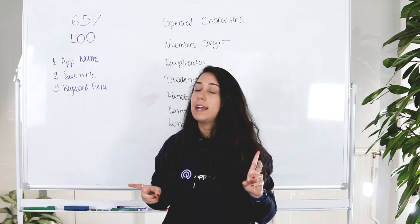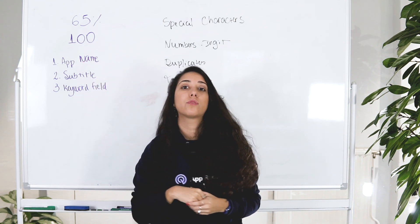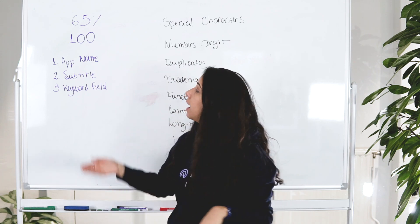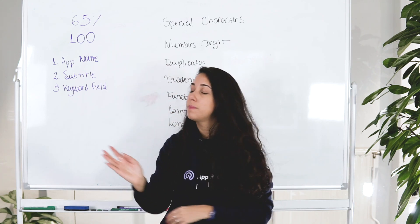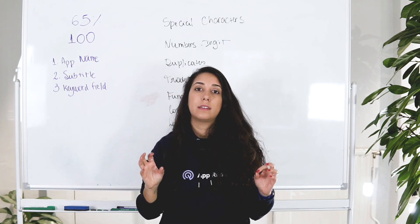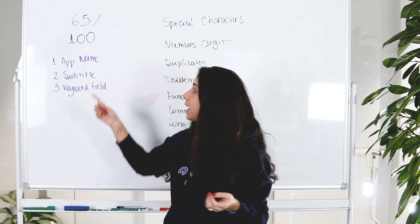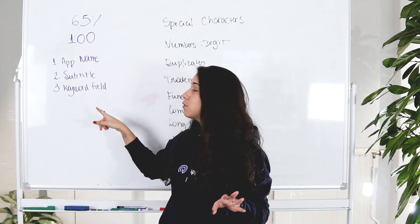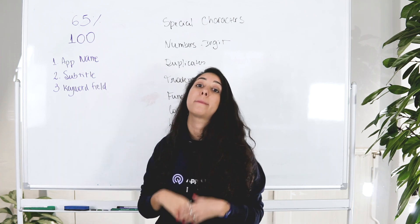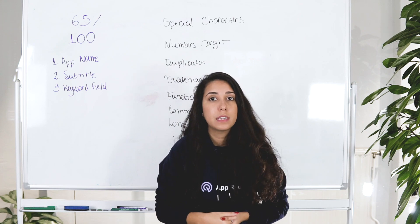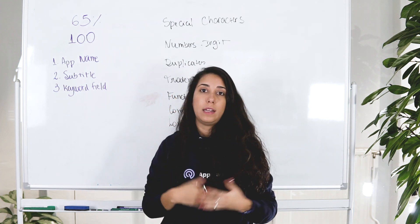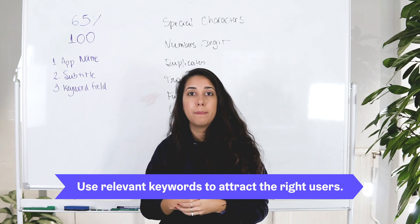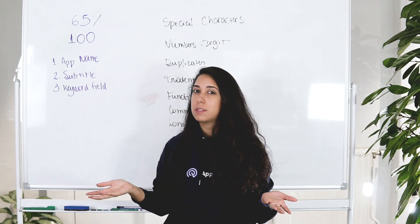That's how important it is to choose the right keywords. The keyword field has 100 characters available, so you should make use of all 100. For iOS, the most relevant field for keywords is the app name, followed by the subtitle, and then the keyword field. But this doesn't mean you shouldn't consider the keyword field — you should still add very relevant keywords.